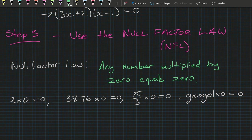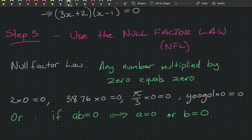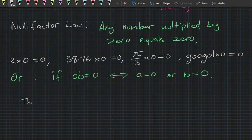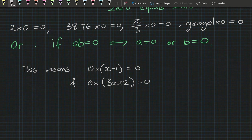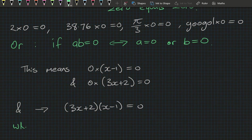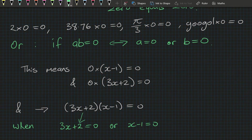So (3x plus 2)(x minus 1) equals 0 when 3x plus 2 equals 0 or x minus 1 equals 0. This bracket relates to this equation and this bracket relates to that equation. Now we just have two linear equations: the left one gives 3x equals minus 2, so x equals minus 2 on 3; the right one gives x equals 1.